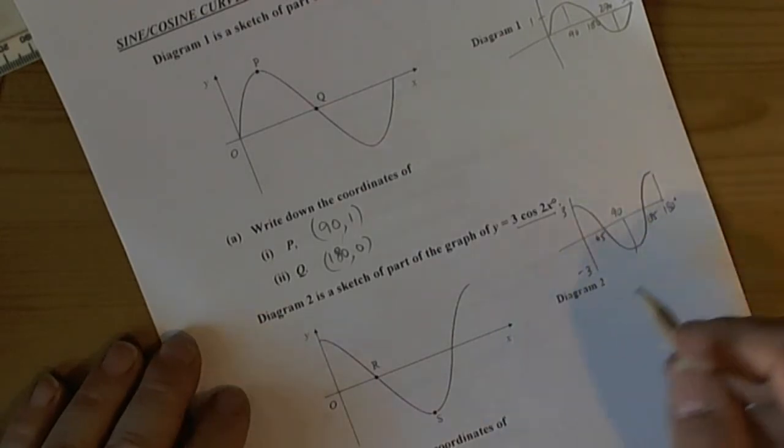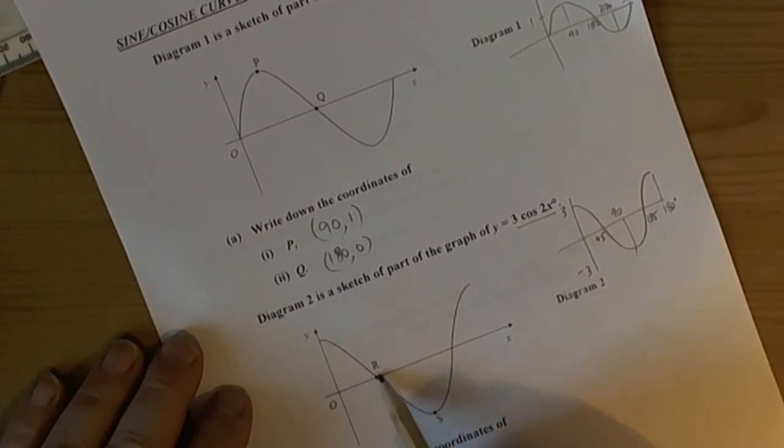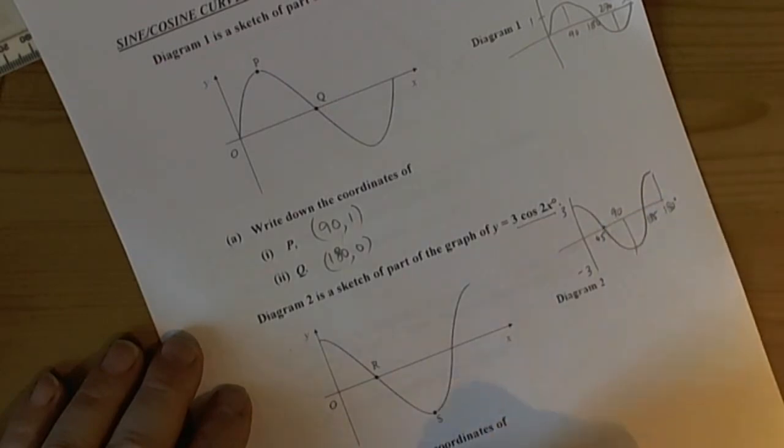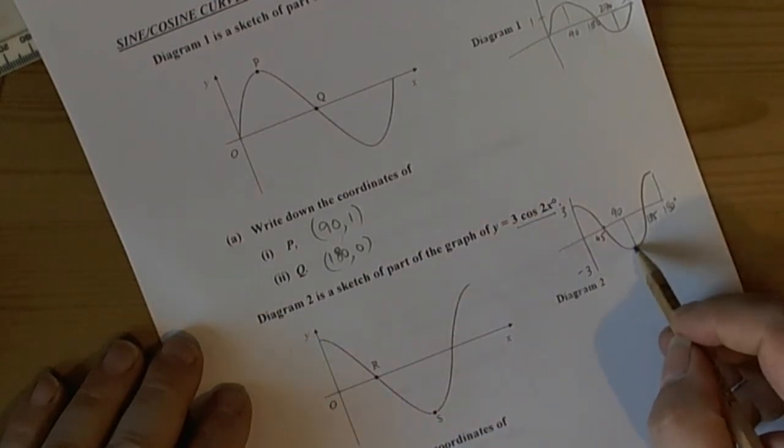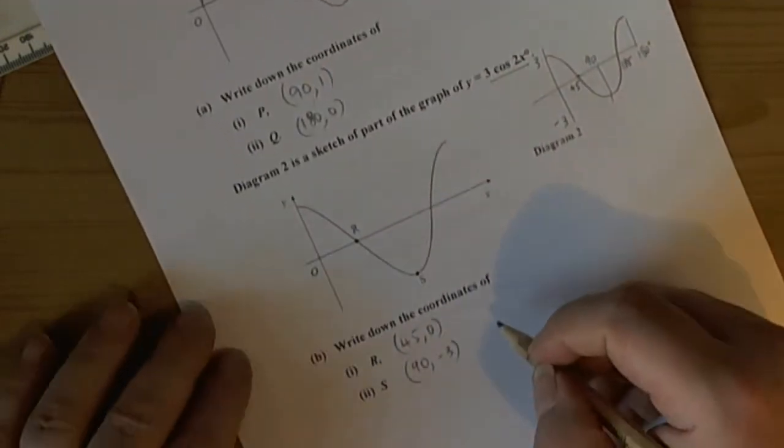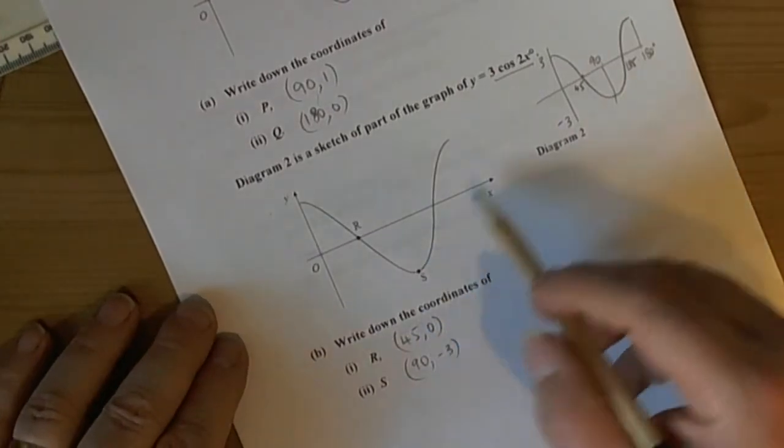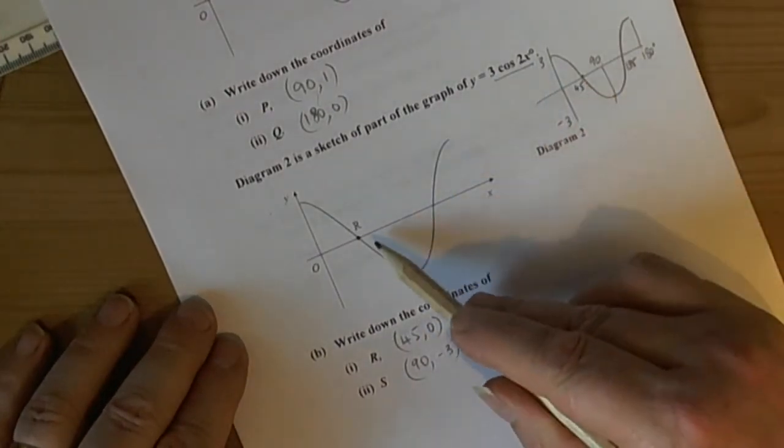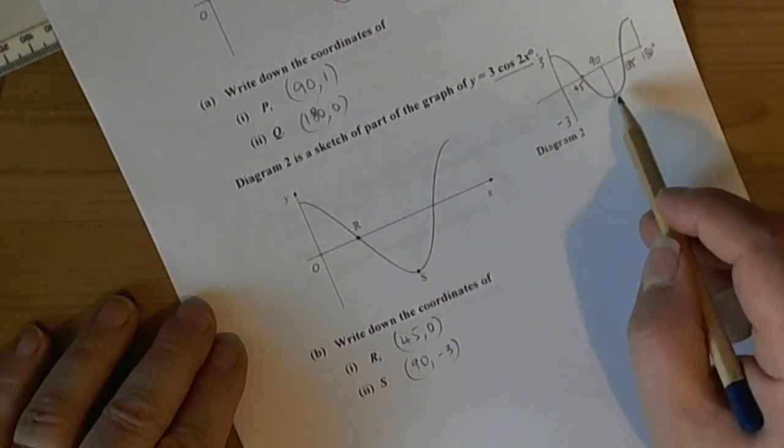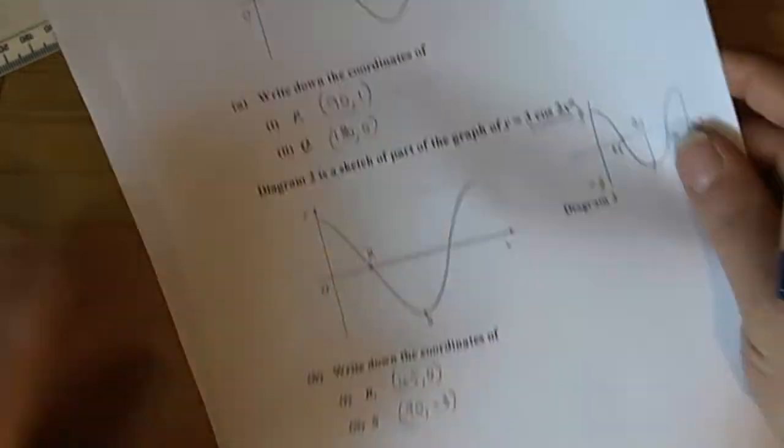So in other words our curve has halved its period and has stretched itself by an amplitude of 3 to minus 3. So let's have a look what do they actually want. They want to know the coordinates of the R point. Well we can see from the transformed curve that it's going to be (45, 0). The S curve is where it's bottomed out and it's bottomed out at 90 and minus 3. So those will be the two coordinates by looking at the curve so the R value is (45, 0) and the S value is where the curve bottomed out.